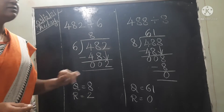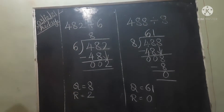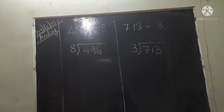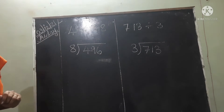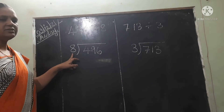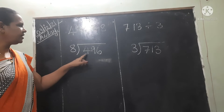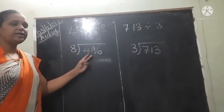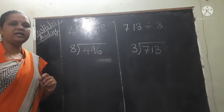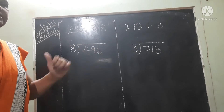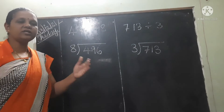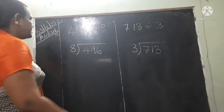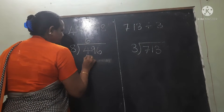So this one you have to copy in your maths notebook. Now we will do the next sum. Here the divisor 8 is the big number and the dividend single digit we see is 4, so we have to take 2 digits. Now in the 8 times table, will 49 come? No. So the nearest smaller number — 48 — in which place? 8 sixes are 48.